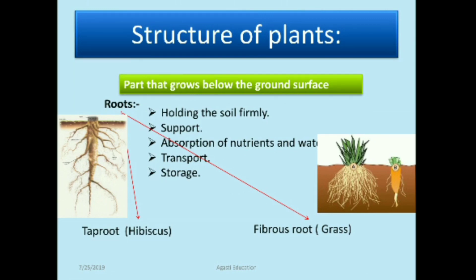Now let's learn about the structure of plants. There are two parts: parts that grow below the ground and parts that grow above the ground. Below the ground, the root is the main part. The functions of the root are: holding the soil firmly to support the plant, absorption of nutrients and water, transport of water and nutrients, and storage. There are two types of roots — tap root (e.g., hibiscus) and fibrous root (e.g., grass).